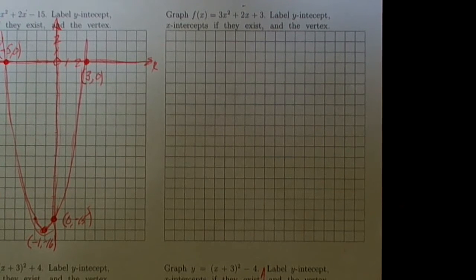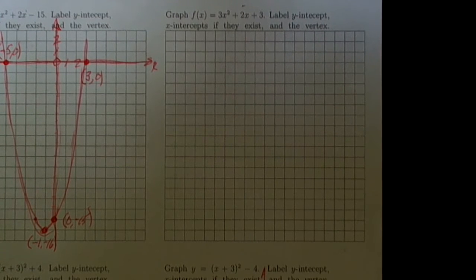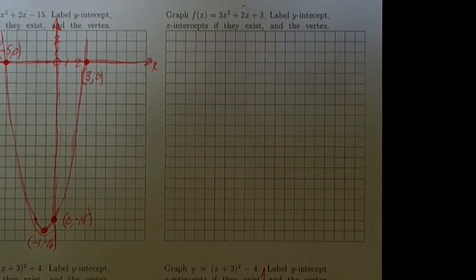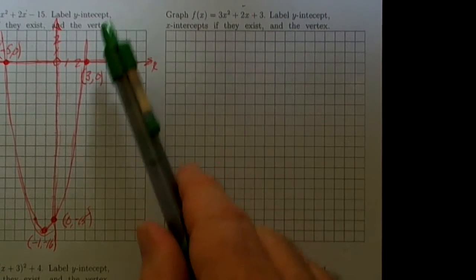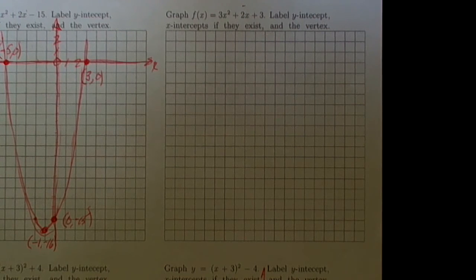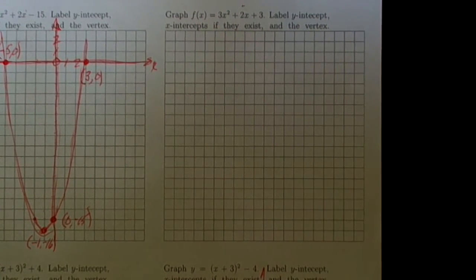This is the second of four videos looking at the graph of some quadratic functions or parabolas. The function that we're looking at is f(x) is equal to 3x² plus 2x plus 3. When we're through we're supposed to label the y-intercept, the x-intercepts if they exist, and the vertex.